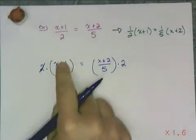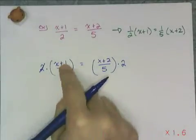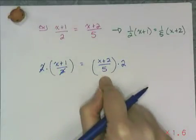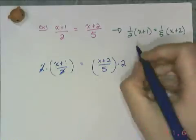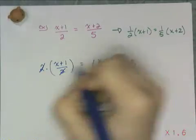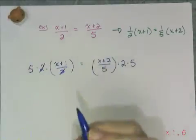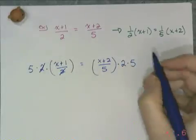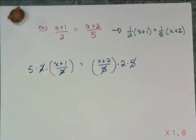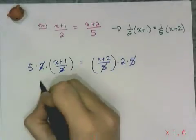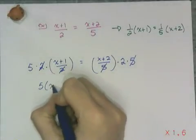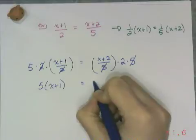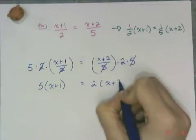And I'm left with just the (x+1) on this side, which I want. But on this side, I still have the divide by 5, which I don't want. So now I'm going to multiply both sides by 5. In total, I multiplied by 10. But the way I write it, those 5s are now canceled. And then I just write down what I have left over. I have a 5 times an (x+1) and a 2 times an (x+2).